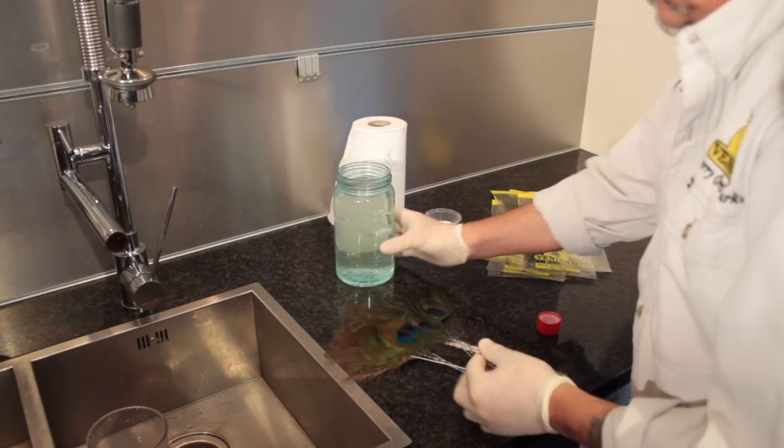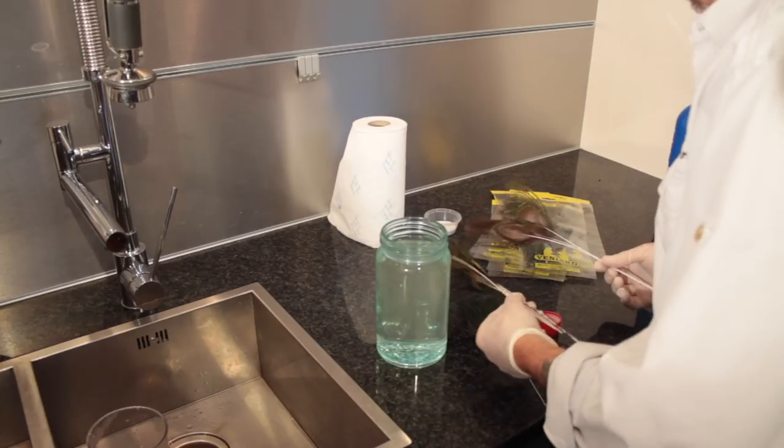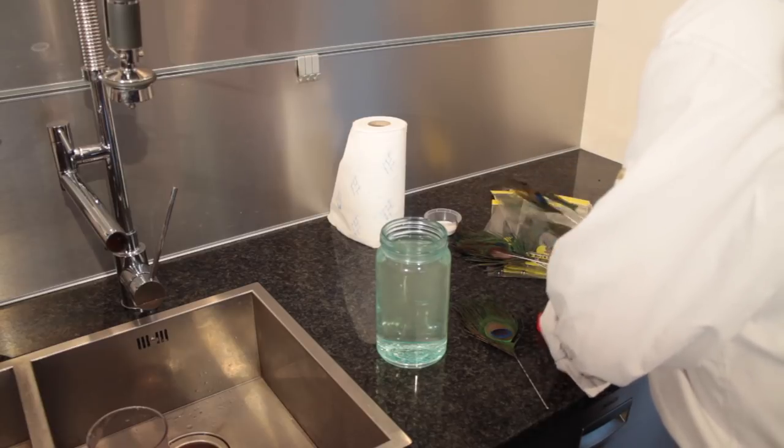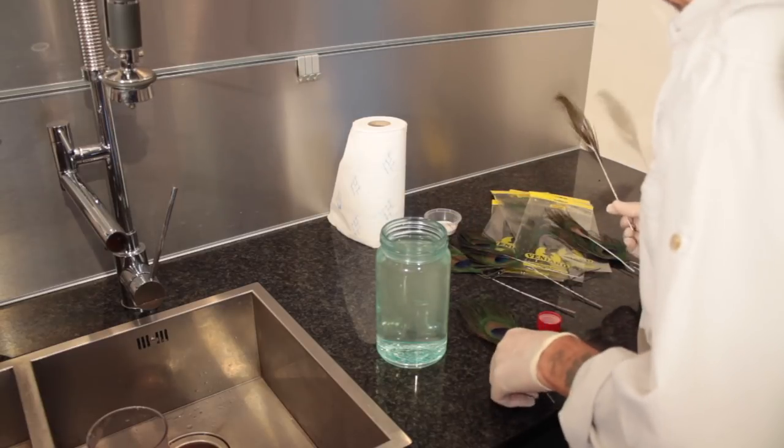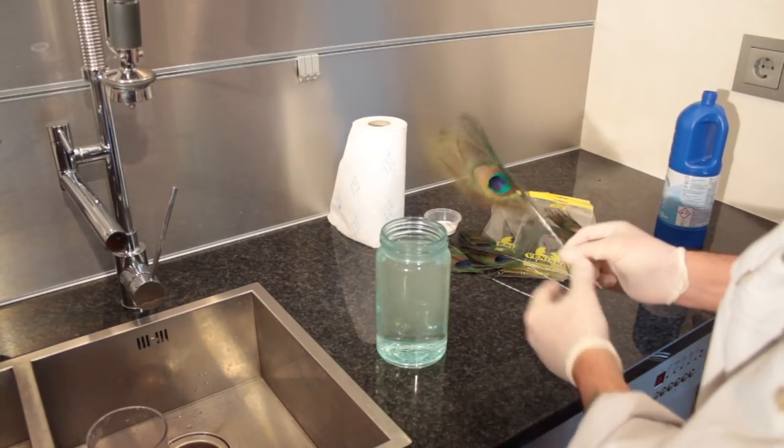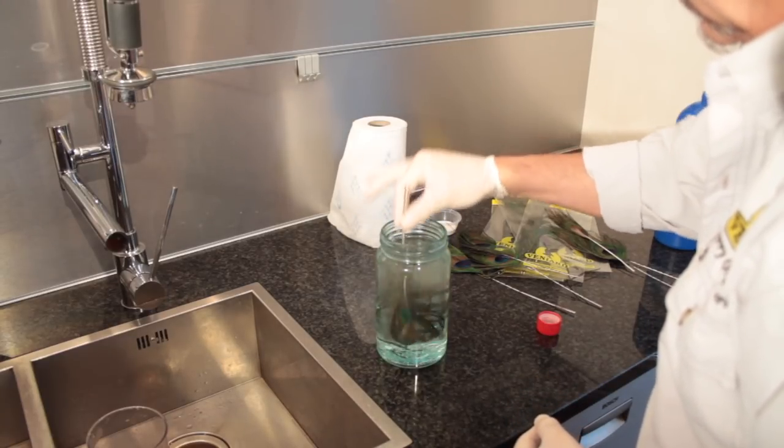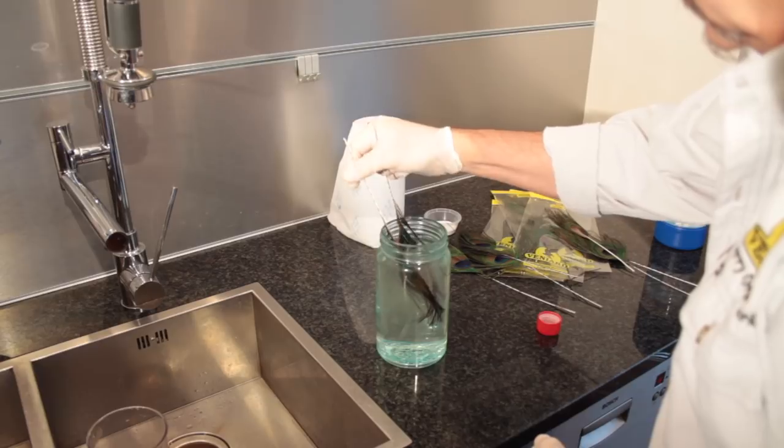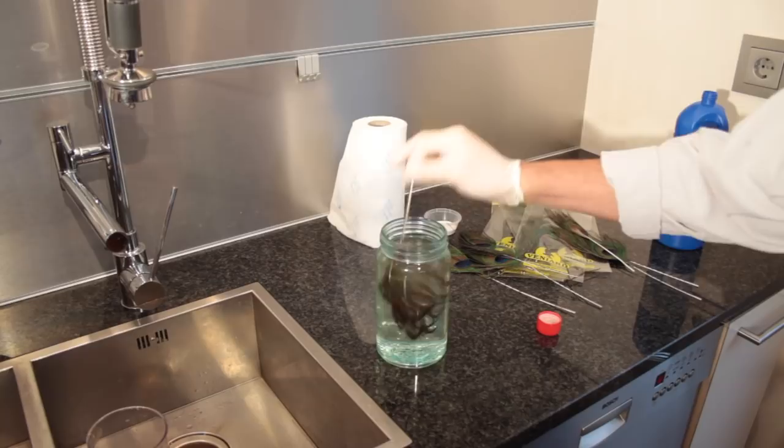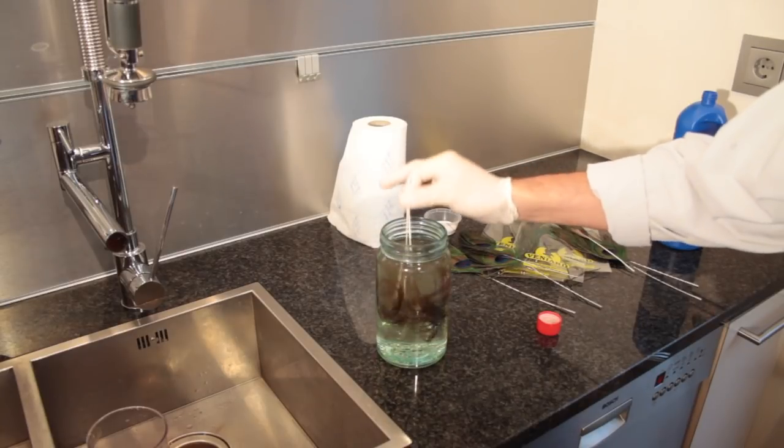Then we take our quills and pick a couple of nice ones out. Take the two quills and put them in the jar. The good thing about the long stems is you can control them and keep them moving all the time.